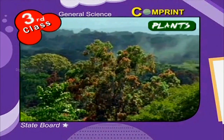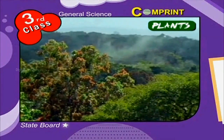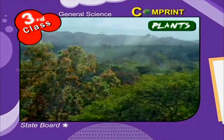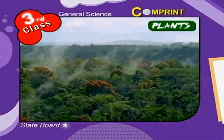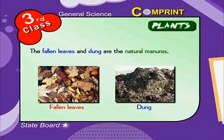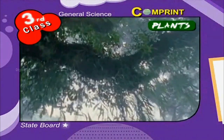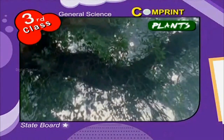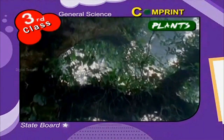Plants need water, air and sunlight to grow. Besides this, they get manure and nutrients from the soil. The fallen leaves and dung are natural manure. Trees keep the surroundings fresh with clean air so that we can breathe fresh.